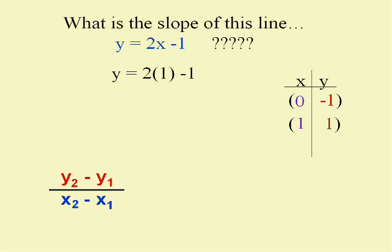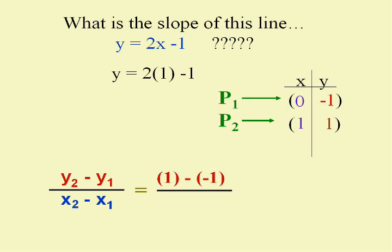Using the formula y2 minus y1 over x2 minus x1, with point one as zero negative-one and point two as one-one: the y part of the second point minus the y part of the first — be careful with the negatives — is one minus negative one, which equals two. The x part gives one minus zero, which is one. Given only the equation, I now know the slope is two.